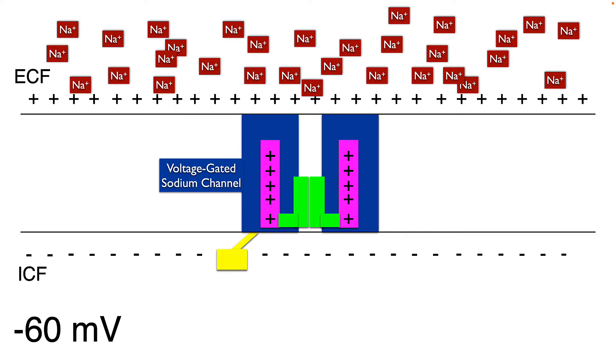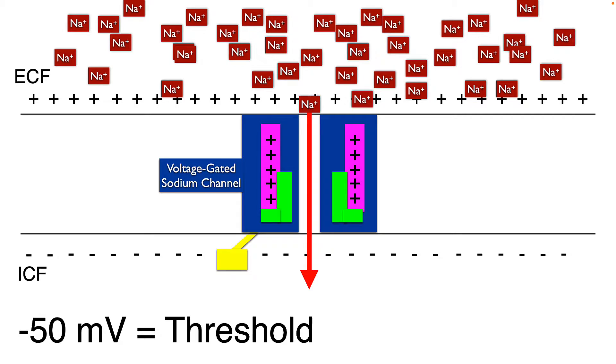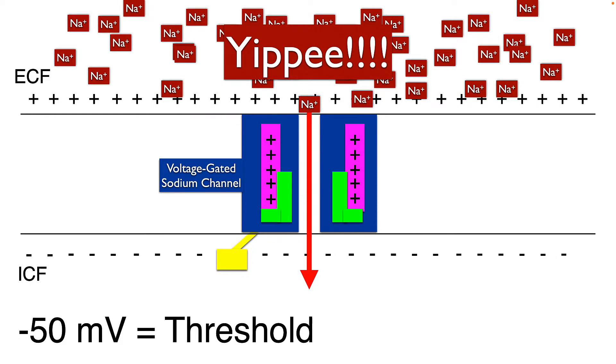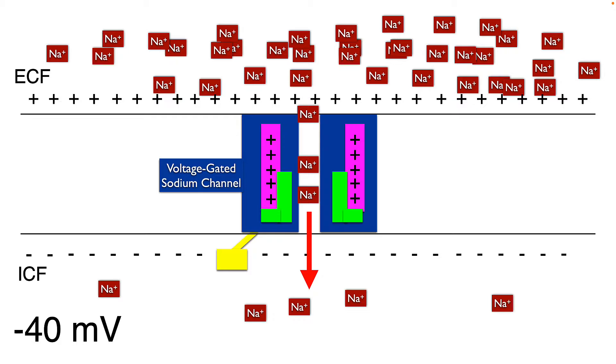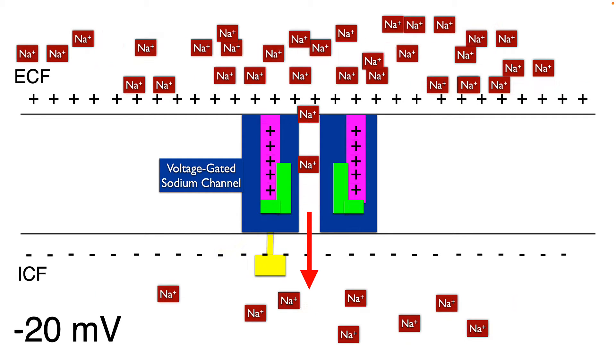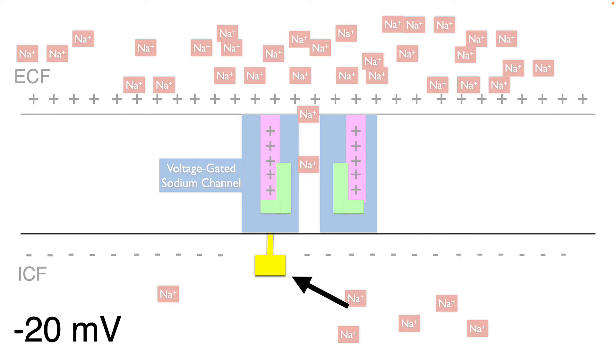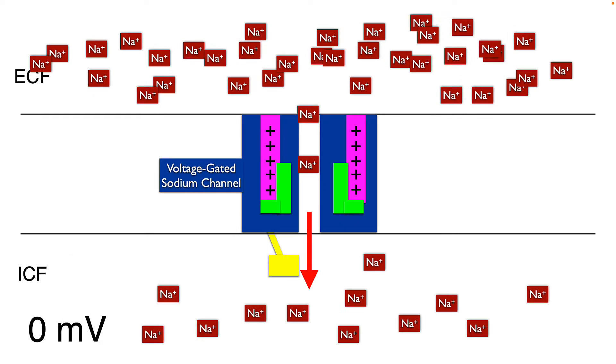minus 60. You see those arginine rods start to move, but nothing yet. Not until we reach threshold. At minus 50 millivolts, they move enough to expose this channel. And now, as far as sodium is concerned, it's good times. They can move through this channel in the direction they want to go. And watch the millivolts. Now we're at minus 40. Now we're at minus 20. So sodium is moving in the direction it wants to go, bringing its positive charge with it and depolarizing the cell. Now, are you keeping an eye on this, the slow inactivation gate?